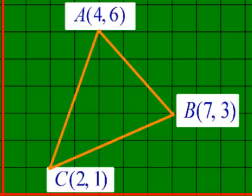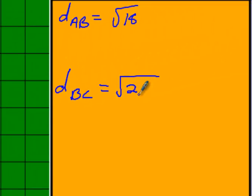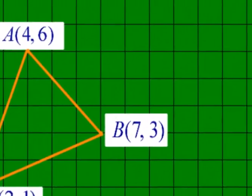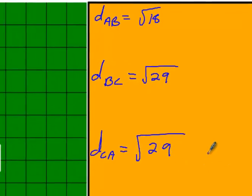Now I need to find the distance between B and C. 7 minus 2 is 5, squared is 25. 3 minus 1 is 2, squared is 4. 25 plus 4 is 29, so I get √29. So far this won't be equilateral since two sides have different lengths. Now finding C and A: 4 minus 2 is 2, squared is 4. 6 minus 1 squared is 25. 4 plus 25 is 29. Two sides match, so this is an isosceles triangle.